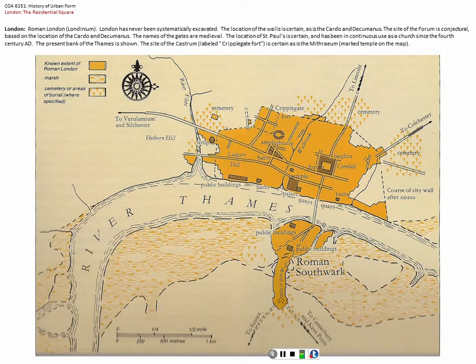England is odd for a number of reasons. They are part of Europe, but they're not part of Europe. They still have their own money, they are not part of the Eurozone, their own currency. They're an island. And so it's always been, even from the Roman period, a somewhat different sort of universe there.